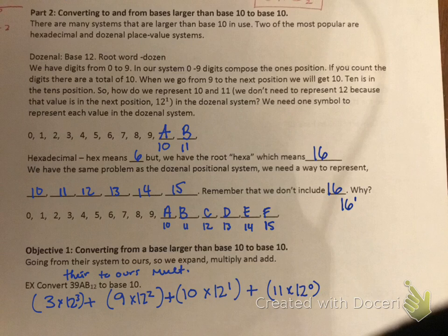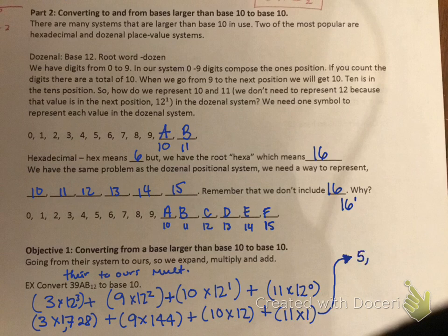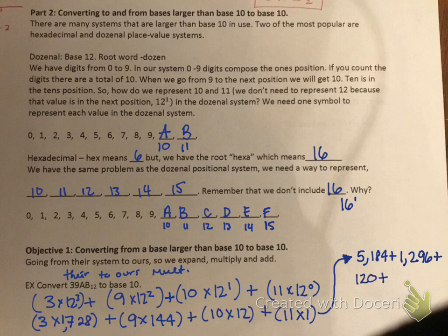Multiplying out: 3×12³ = 3×1728 = 5184, plus 9×12² = 9×144 = 1296, plus 10×12 = 120, plus 11×1 = 11. Adding those together: 5184 + 1296 + 120 + 11 = 6611.